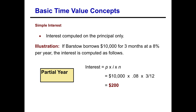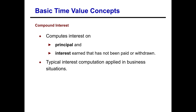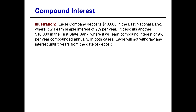Compound interest is not only earning interest on the principal but also earning interest on the interest accumulated up to that point. Looking at the Eagle Company example: they deposit ten thousand dollars in Last National Bank earning simple interest of nine percent per year, and another ten thousand dollars in First State Bank earning compound interest of nine percent per year compounded annually. In both cases Eagle will not withdraw any interest until three years from the date of deposit. This lets us see the difference between simple and compound interest over three years.